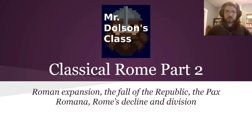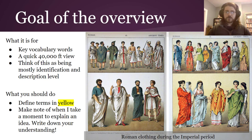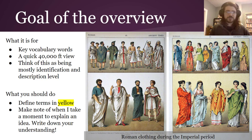Welcome to this overview of Classical Rome Part 2. Your goal is to get a big broad overview of these topics, like an overview of this fascinating clothing. Notice — no pants at all. It's just everybody in togas and tunicas and all these other clothes. It's fascinating.